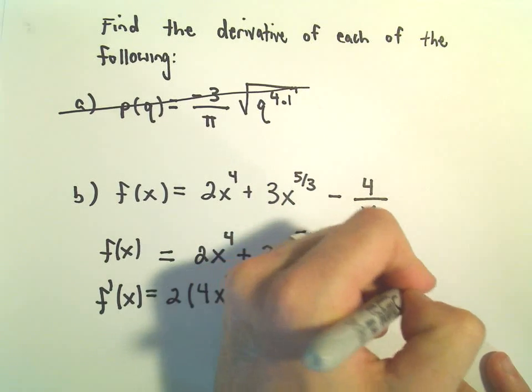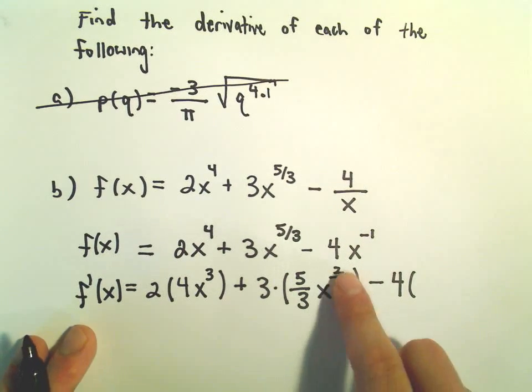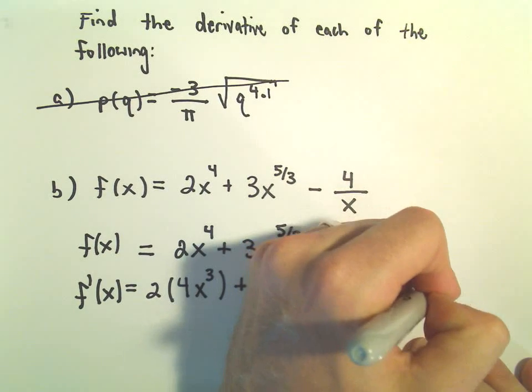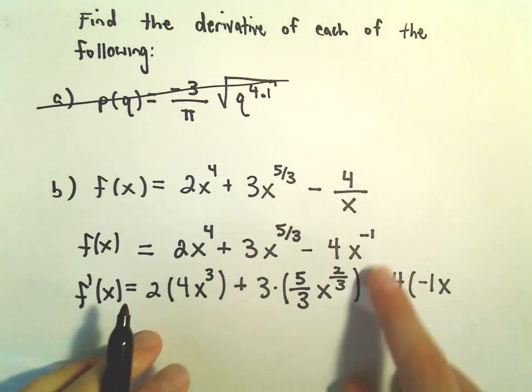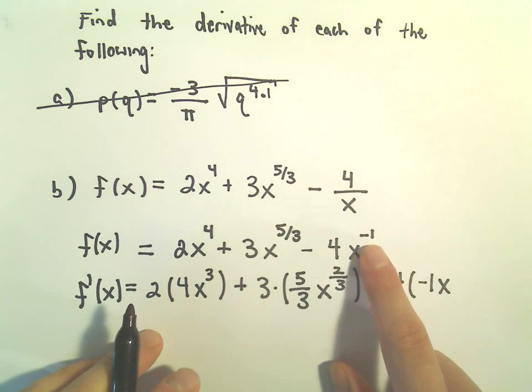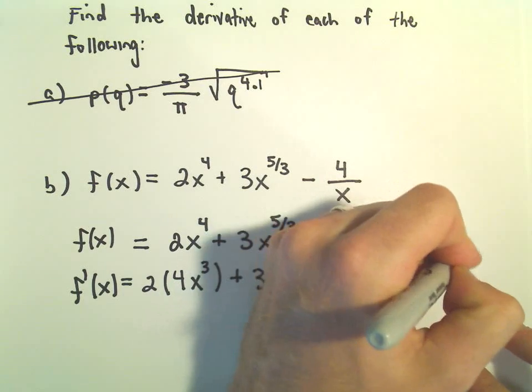And then we have minus 4. So if we take the derivative of x to the negative first, we'll get negative 1 out front, x. Be careful here, because you're subtracting 1. So if you subtract 1, we'll get negative 2.